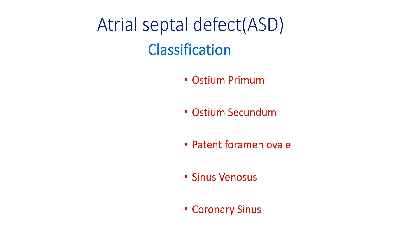Atrial septal defect is an acyanotic congenital heart disease. Congenital means it's present since birth. Genetics may have some role, and there are risk factors like rubella infection during pregnancy and exposure to tobacco, alcohol, and drugs like cocaine during pregnancy, as well as obesity and diabetes.